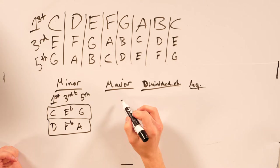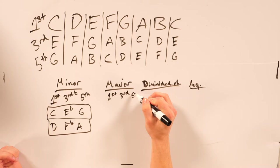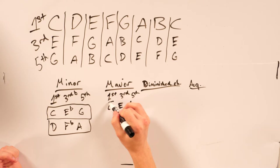So major, obviously, is the first, the third, and the fifth, and you don't do anything with these. So for C, it'd be C, E, G.